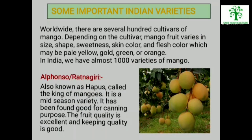Some Important Indian Varieties: Worldwide, there are several hundred cultivars of mango. Depending on the cultivar, mango fruits vary in size, shape, sweetness, skin color and flesh color, which may be pale yellow, gold, green or orange. In India, we have almost 1000 varieties of mango.